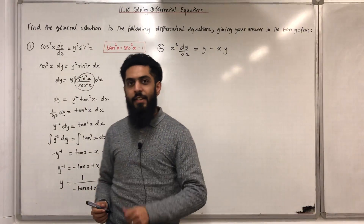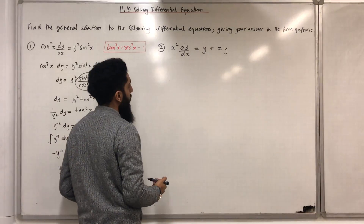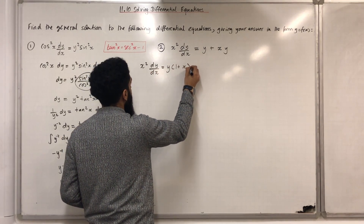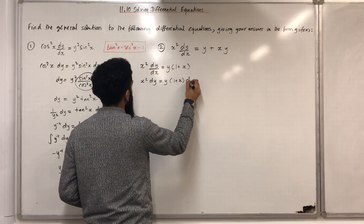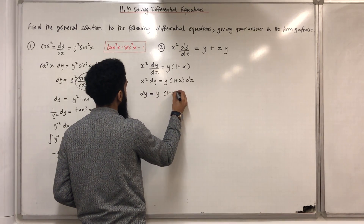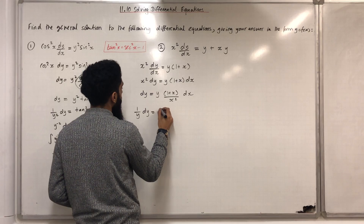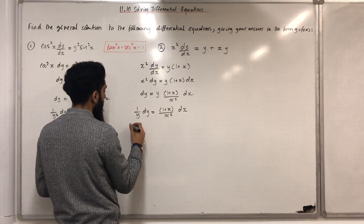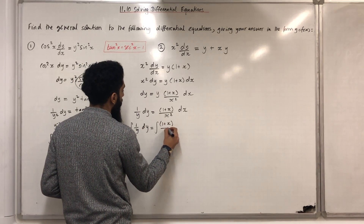Let's look at question 2. We notice that on the right-hand side the expression can be factorised — there's a common factor of y between the two terms. So we take out the common factor y and write: x² dy over dx equals y(1 + x). Multiplying both sides by dx gives x² dy equals y(1 + x) dx. Dividing both sides by x² gives dy equals y(1 + x) over x² dx. Dividing both sides by y gives 1 over y dy equals (1 + x) over x² dx. To get rid of the differentials we integrate both sides: integral of 1 over y dy equals integral of (1 + x) over x² dx.